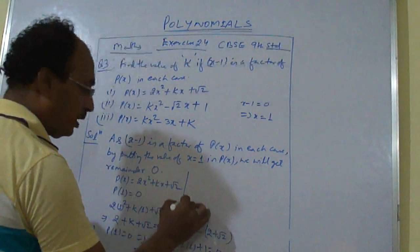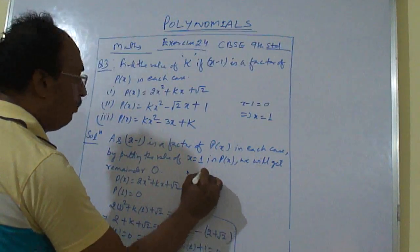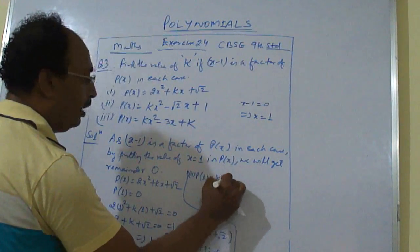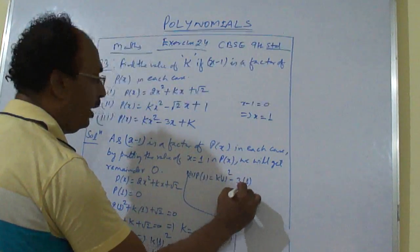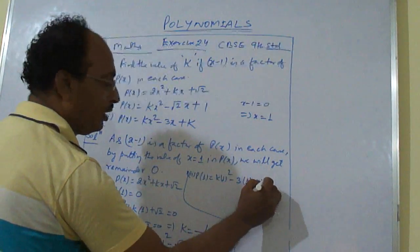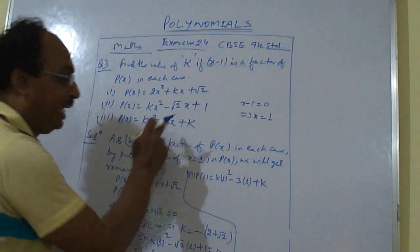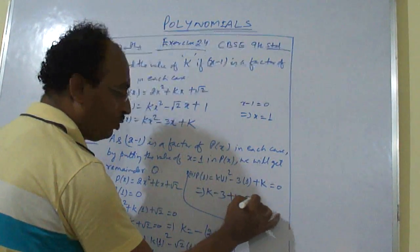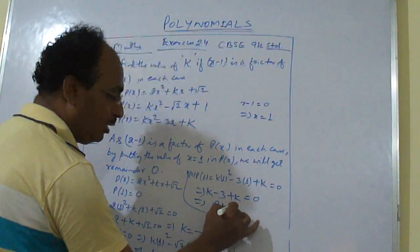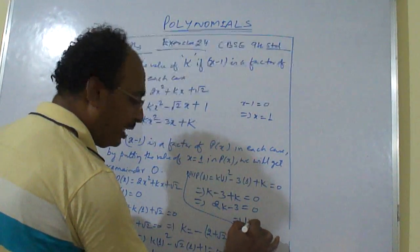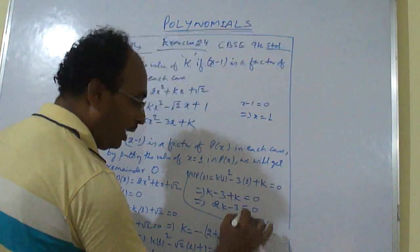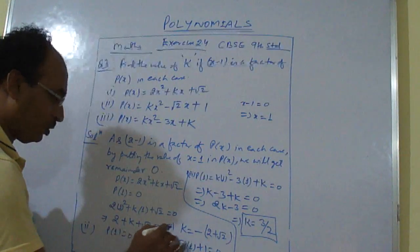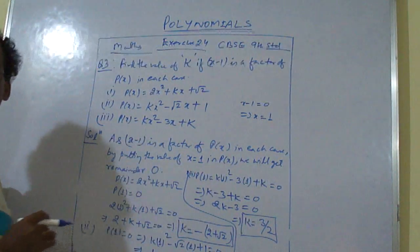For the third one, we find p(1) is equal to k into 1 square minus 3 into 1 plus k is equal to 0. Again k has come here. So k minus 3 plus k is equal to 0, which gives 2k minus 3 is equal to 0, and further k is equal to 3 by 2. So these are the values we have got when x minus 1 is a factor.